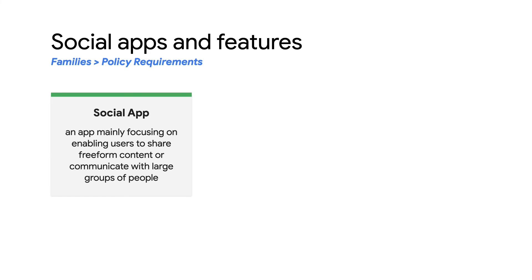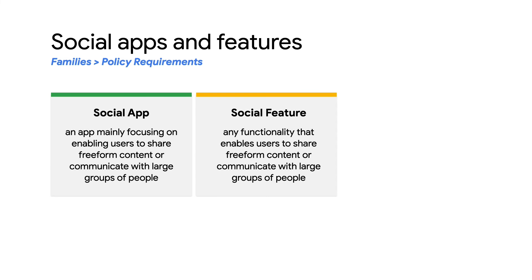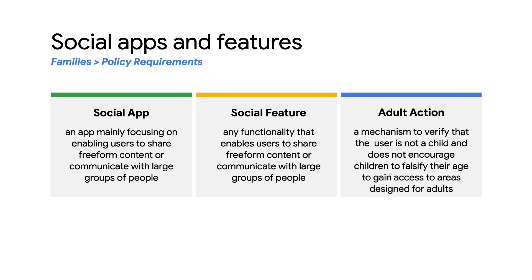Let's take a look at the new requirement on social apps and features. A social app is an app where the main focus is to enable users to share free-form content or communicate with large groups of people. A social feature is any additional app functionality that enables users to share free-form content or communicate with large groups of people. And adult action means a mechanism to verify that the user is not a child and does not encourage children to falsify their age to gain access to areas of your app designed for adults — for example, a PIN code, password, birth date, email verification, photo ID, credit card, or social security number.